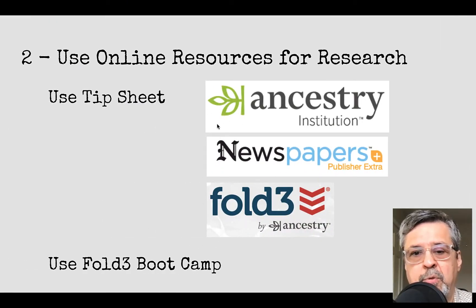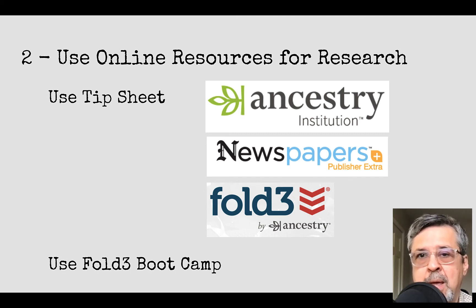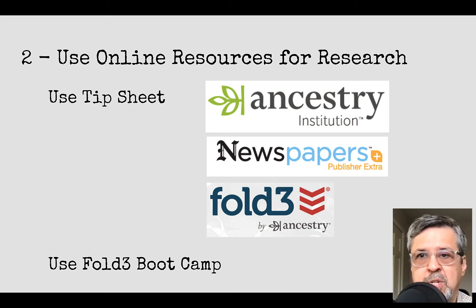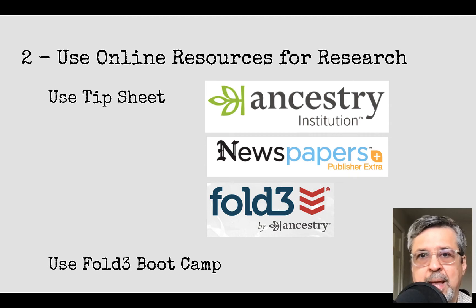A note about these three sites — Ancestry, Newspapers, and Fold 3. You may already have a membership. If you don't, the boot camp has instructions on how to get access for free. As of this recording, we're using a VPN. You'll need to get the instructions and a password for a VPN specifically for you. Once you have that VPN, you're joining the institutional version of these products — kind of like using a library version — which is adequate for what we need.